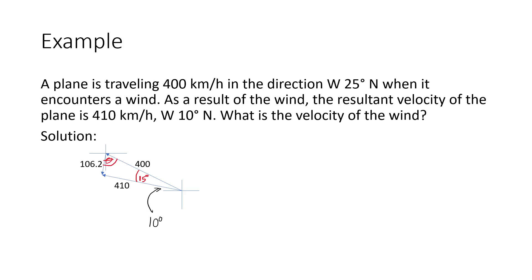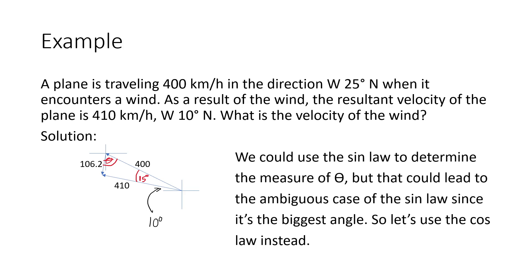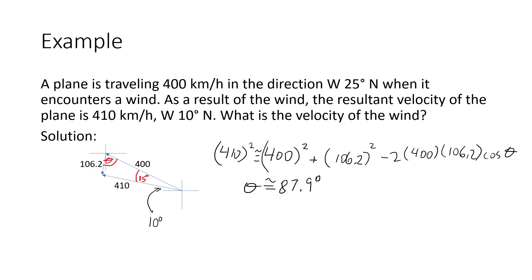Now we'd like to know what is the angle theta formed in that triangle. Someone might be tempted to use the sine law — sine theta over 410 equals sine 15 degrees over 106.2 — but there's a danger because theta might be obtuse. The reason it might be obtuse is that theta is across from the longest side. So rather than risk getting an acute angle when it should be obtuse, let's just use the cosine law since we know all three side lengths anyway. Using the cosine law, we get that theta is equal to approximately 87.9 degrees.